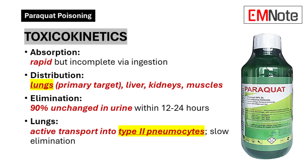The compound exhibits relatively rapid elimination kinetics, with approximately 90% of the absorbed dose being excreted unchanged in the urine within the initial 12 to 24 hours post-exposure. Of particular clinical significance is the compound's predilection for pulmonary tissue, where it is actively transported into type 2 pneumocytes, resulting in prolonged local tissue exposure due to markedly delayed pulmonary elimination.